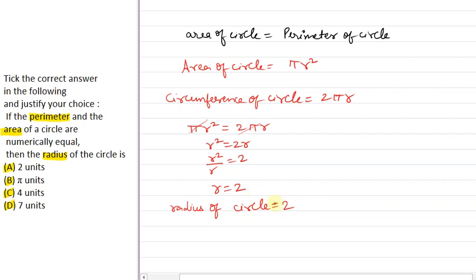This means radius of circle is 2 units. So here the answer is 2 units, which is part A. The radius of circle is 2 units and the answer is part A. That is the explanation for this question. I hope it is understood, thank you.